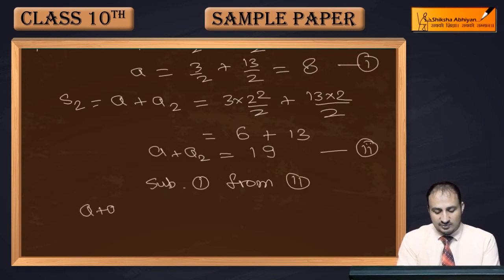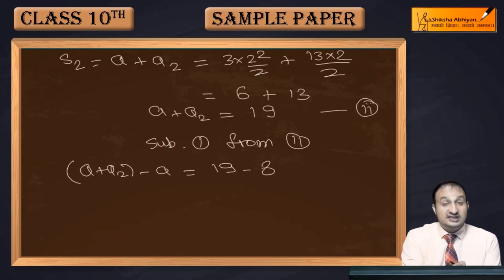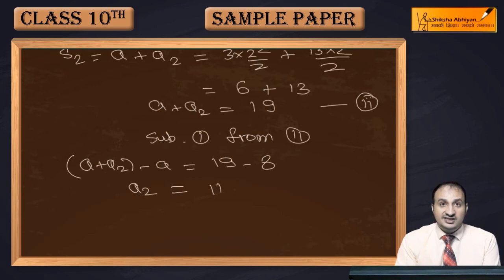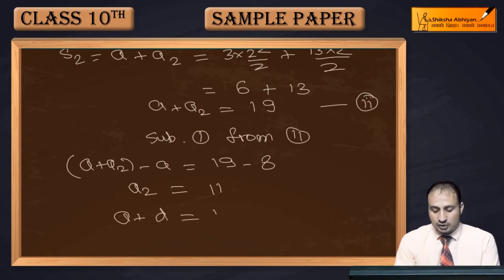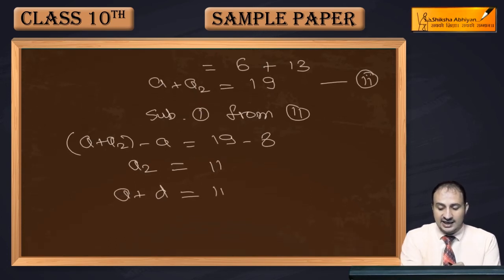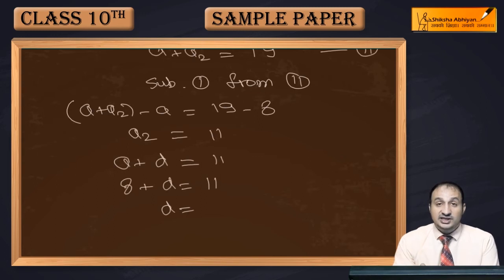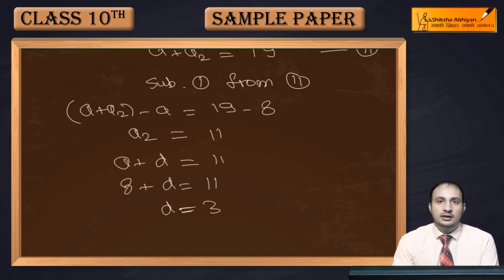a + a₂ minus a = 19 minus 8, so a₂ = 11. The second term a₂ = a + d = 11. Substituting a = 8, we get d = 11 − 8 = 3. So the common difference d = 3.